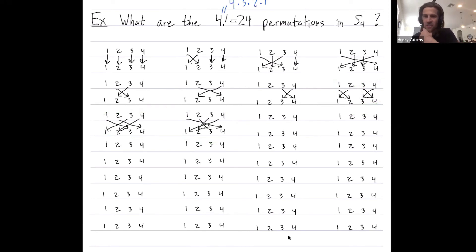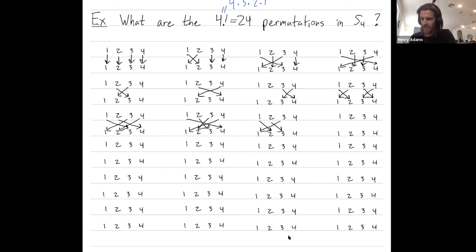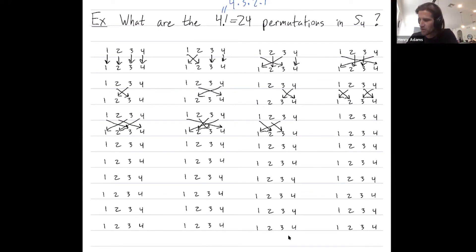Let's get into cycles of length 3. A cycle of length 3 would be: 1 goes to 2, 2 goes to 3, and 3 goes back to 1, while 4 stays put. I could also do this in the opposite order: send 1 to 3, 3 to 2, and 2 to 1, with 4 staying put. Those were my two 3-cycles on {1, 2, 3}.